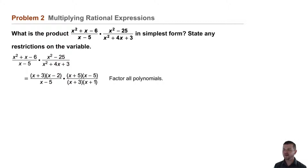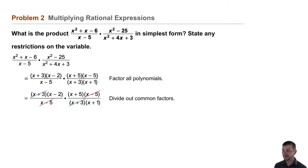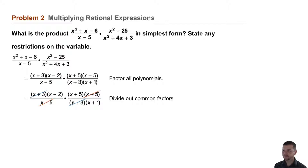Then we'll divide out the common factors. In this case we have an x plus 3 in the top left and an x plus 3 in the bottom right, and x minus 5 in the bottom left and x minus 5 in the top right. Simplifying, our expression now becomes x minus 2 times x plus 5 over x plus 1.